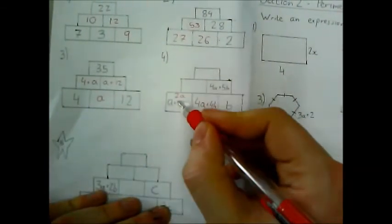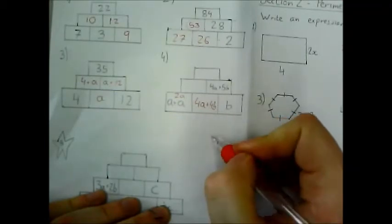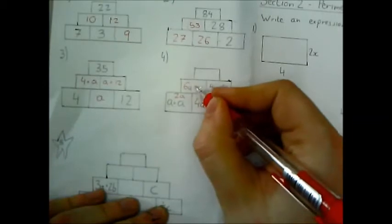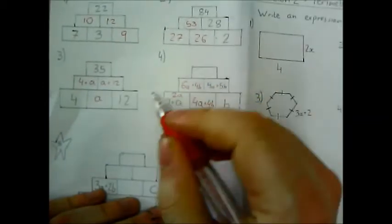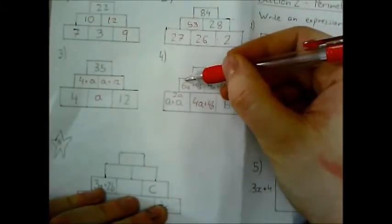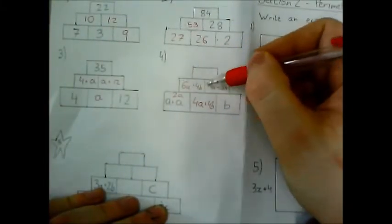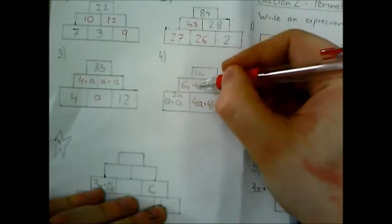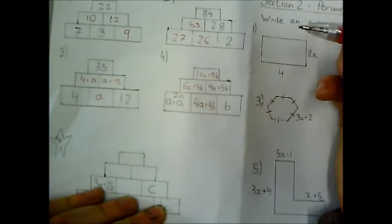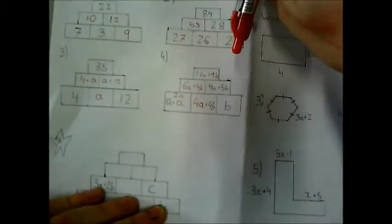OK. So this box here will be 2a plus 4a plus 4b. So 2a plus 4a is 6 lots of a. And then plus 4b, because that doesn't simplify with the 6a, because they're not the like terms. And then finally, this box here is 6a plus 4a is 10a. And 4b plus 5b is 9b.